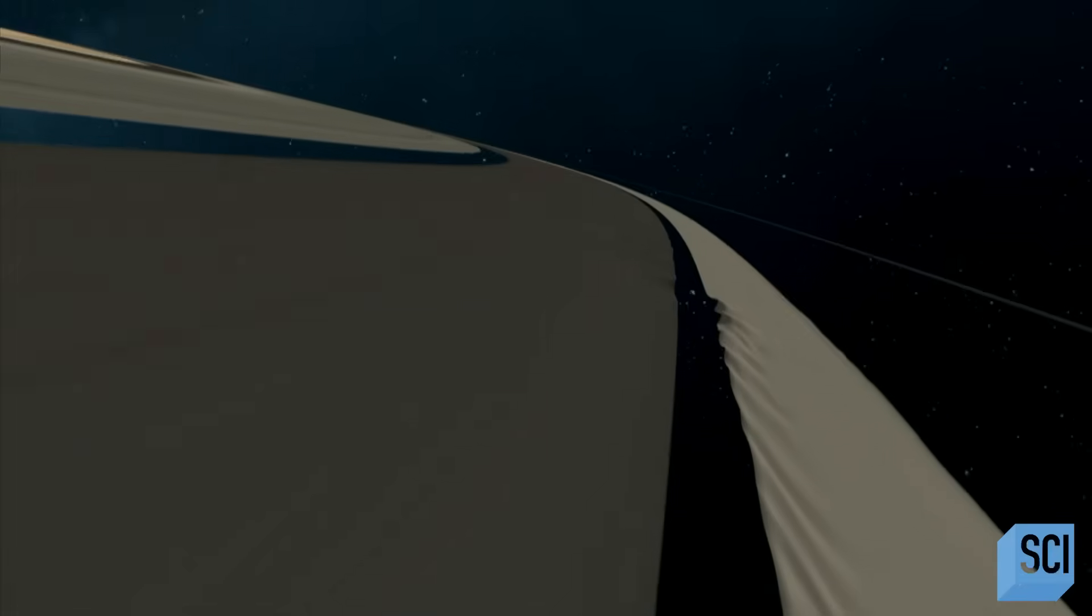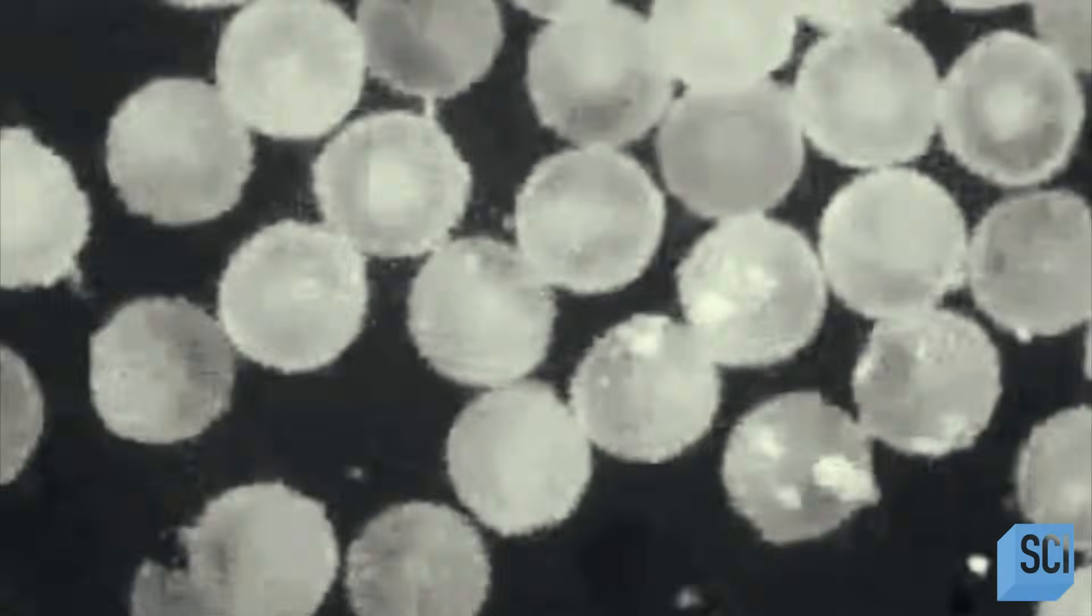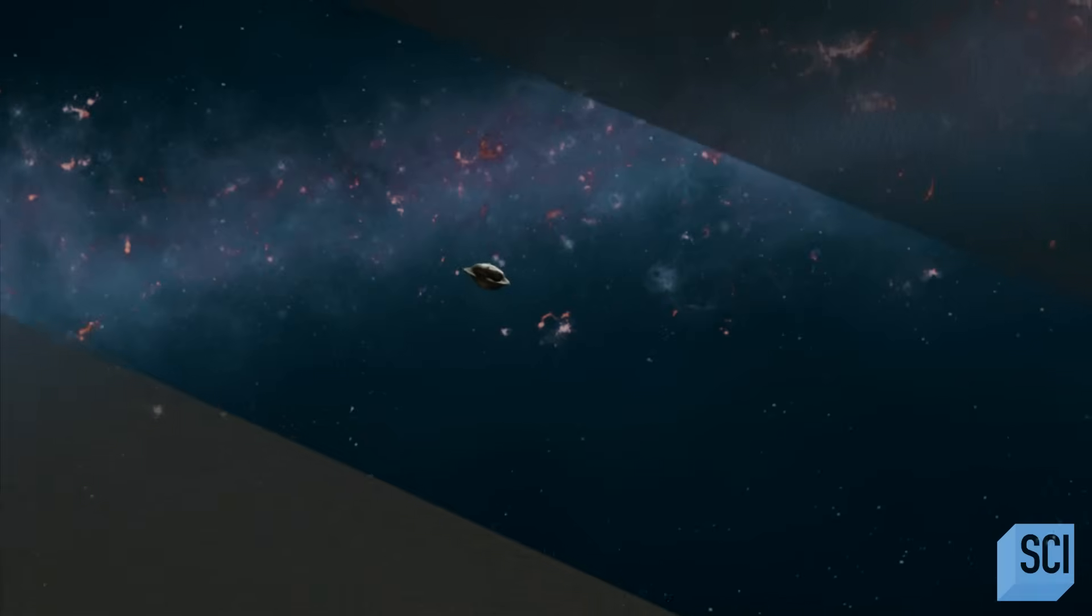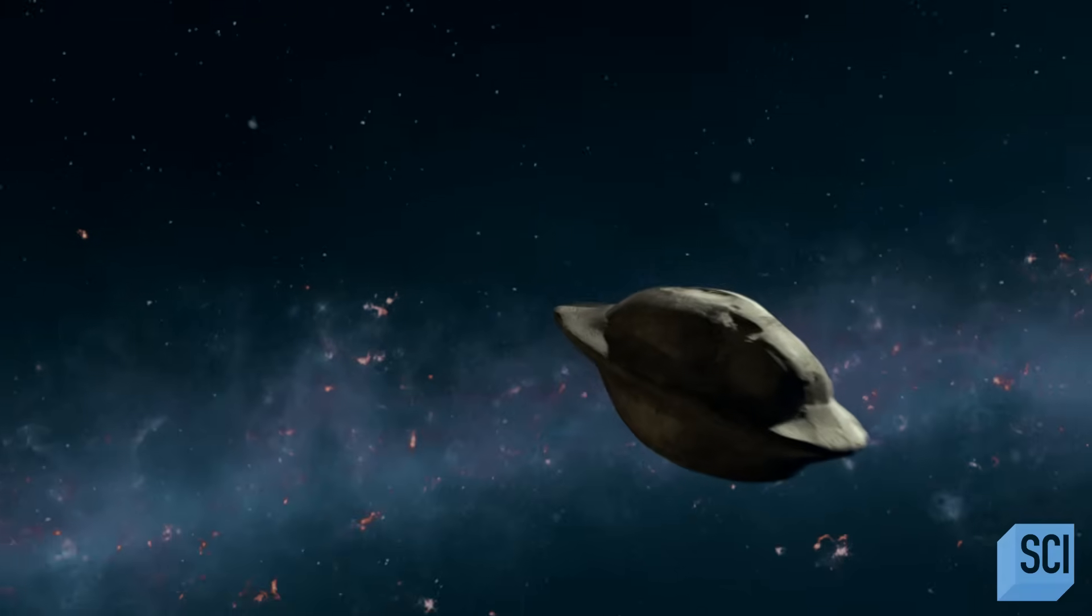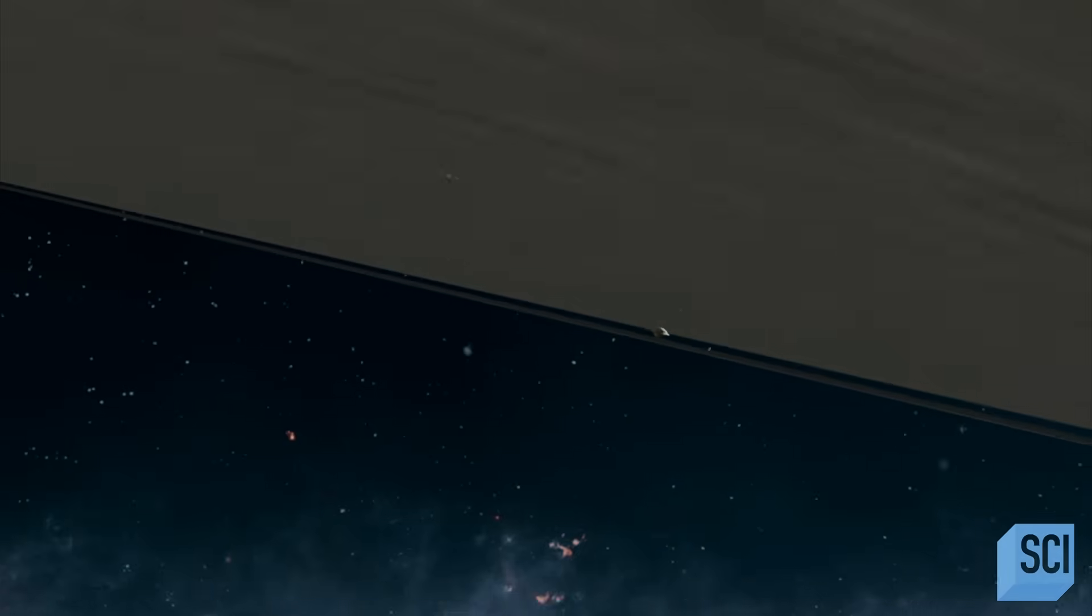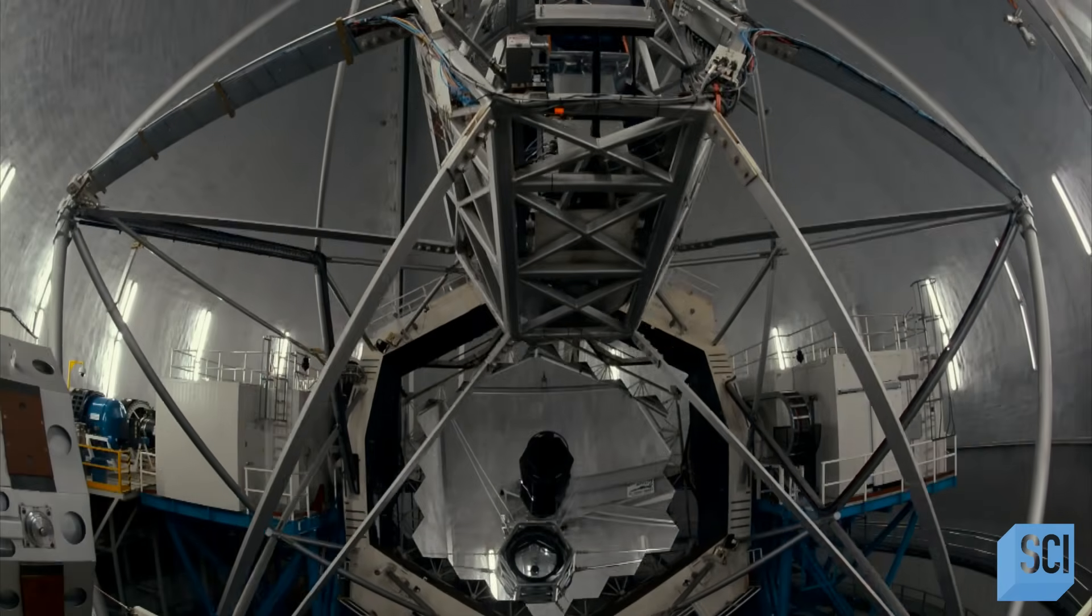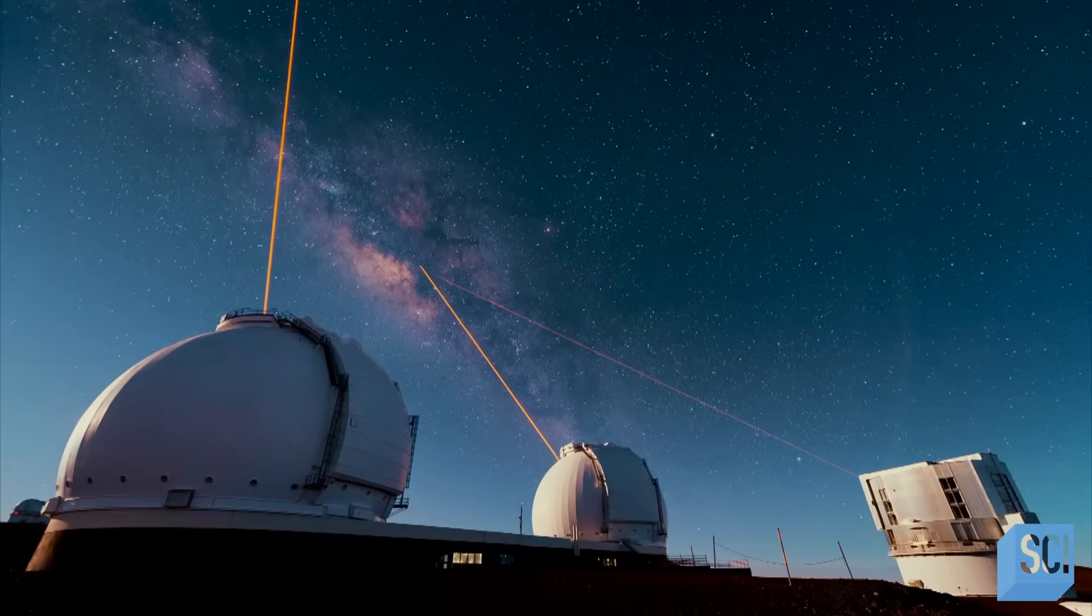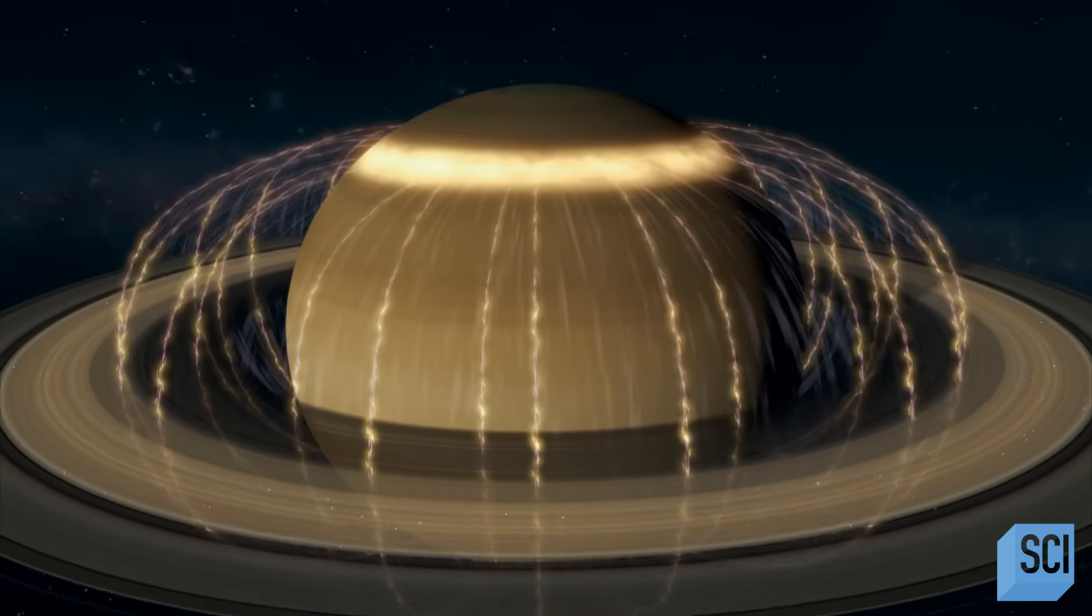Are Saturn's bright, shining rings destined to die? Scientists scramble to find answers. Does an ice-guzzling moon in the outer edges of the rings hint at their ultimate fate? Or have the world's most powerful telescopes already witnessed the beginning of a very different end?